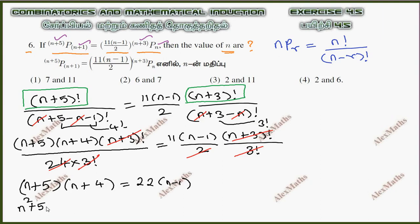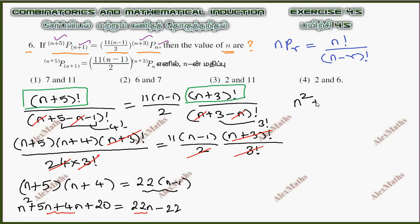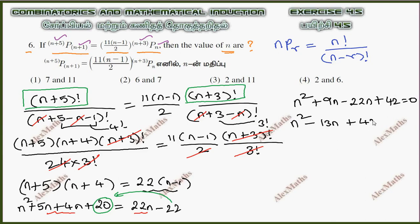Expanding: n squared plus 5n plus 4n plus 20 equals 22n minus 22. This gives n squared plus 9n minus 22n, so n squared minus 13n, and 20 plus 22 gives plus 42 equals 0. So n squared minus 13n plus 42 equals 0.